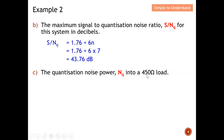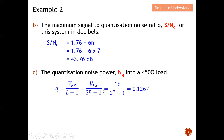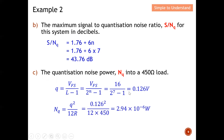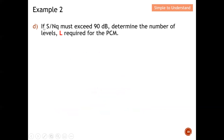To compute Q, the formula is Q = voltage full swing divided by L, where L = 2 to the power N. The voltage full swing is 16 volts and N = 7, so Q = 0.126 volts. The quantization noise power is Q squared divided by 12R. With Q = 0.126 and R = 450 ohms, the quantization noise power equals 2.94 × 10 to the power minus 6 watts.